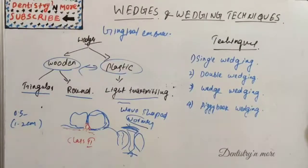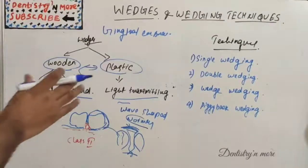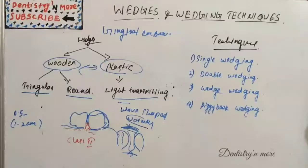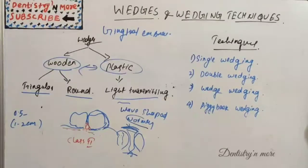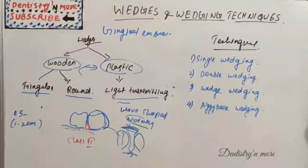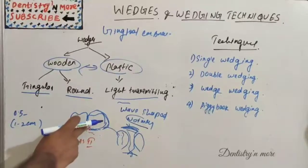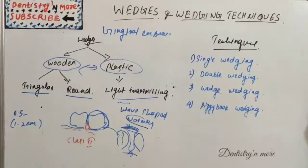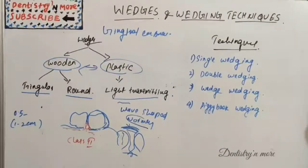Some important points to keep in mind while using wedges: the length of the wedge should be in the range of 1 to 1.2 centimeters. It should not irritate the tongue, cheek, or gingival tissue. Wedges should be inserted beneath the contact area in the gingival embrasure — usually inserted from the lingual embrasure area as it is wider than the buccal area.